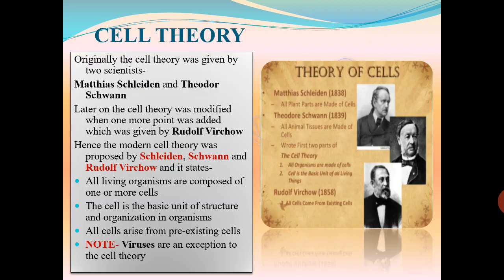Cell theory. Originally, the cell theory was given by two scientists: Matthias Schleiden and Theodor Schwann. In the year 1838, Schleiden, who was a botanist, said that all plant parts are made up of cells. One year later, Schwann, who was a zoologist, said that all animal tissues are made up of cells. Before this, nobody — not Robert Hooke or Leeuwenhoek — had mentioned that all plant or animal bodies are made up of cells; they just discovered or observed cells. So these two scientists first stated that all organisms are made up of cells and that cell is the basic unit of living things.